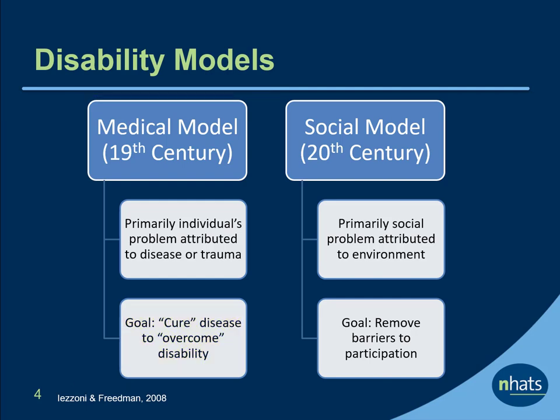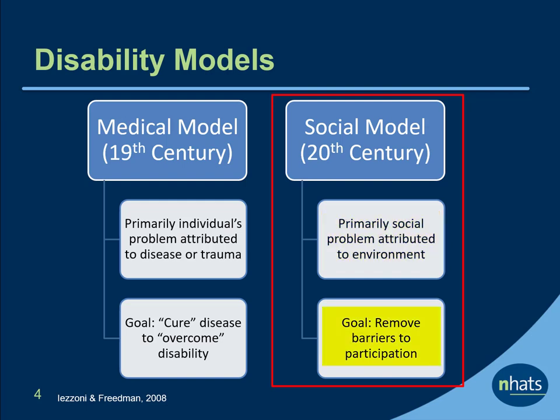By the 20th century, a social model of disability emerged, where disability was perceived as a social problem attributed to barriers that excluded individuals from participation. Policies emerged to attempt to remove these barriers — for example, by making buildings accessible.